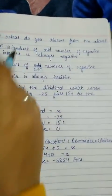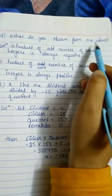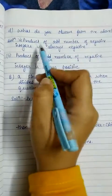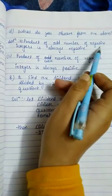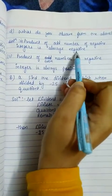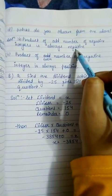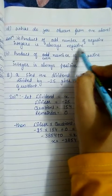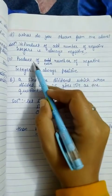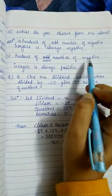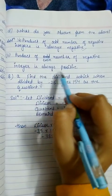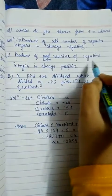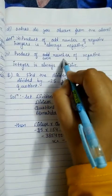From the above parts, what do we observe? First observation: the product of an odd number of negative integers is always negative. Second observation: the product of an even number of negative integers is always positive.